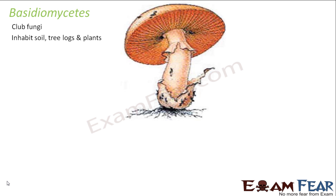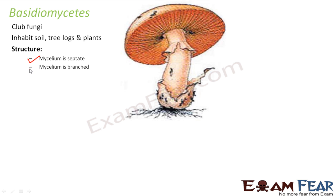Basidiomycetes also inhabit soil, tree logs, and plants. Talking about structure, the mycelium is septate and branched. Whenever the mycelium is septate it is generally branched, meaning it has septa or cross walls.